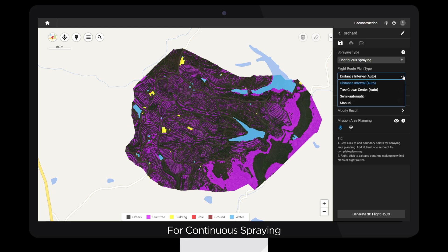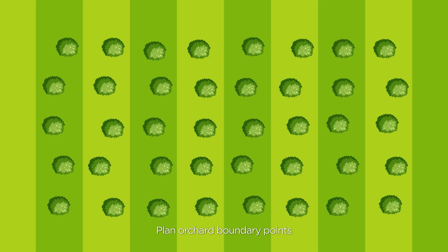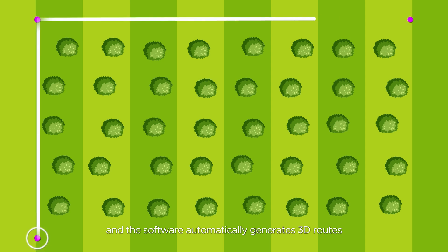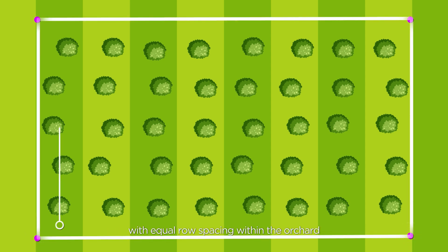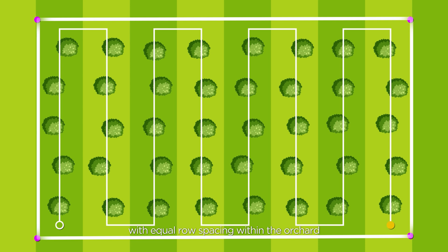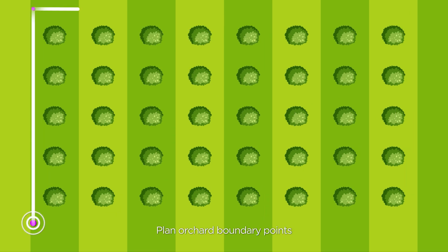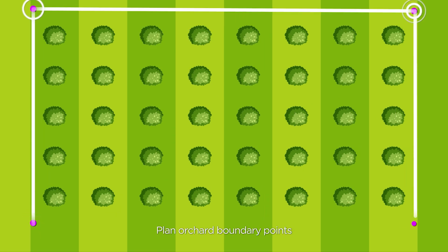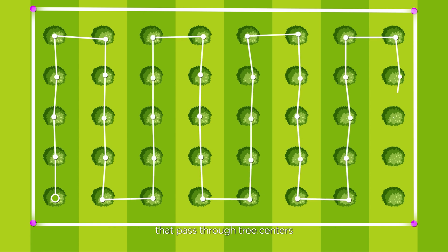For continuous spraying, there are four route planning types. Distance Interval: plan Orchard Boundary Points, and the software automatically generates 3D routes with equal row spacing within the orchard. Tree Crown Center: plan Orchard Boundary Points, and the software automatically generates 3D routes that pass through tree centers.